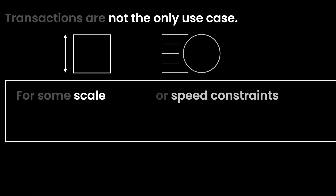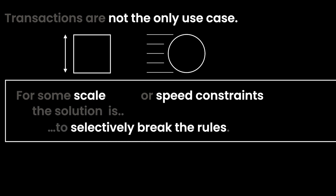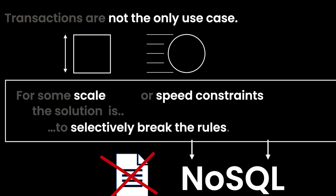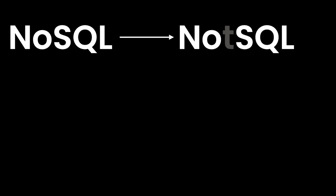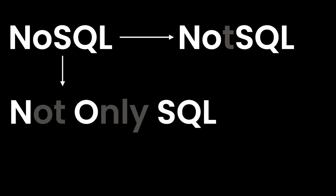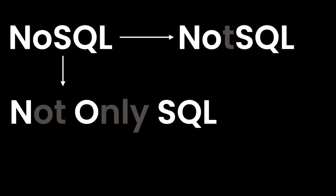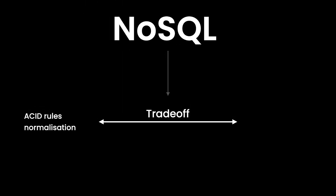Sometimes scale or speed constraints are such that the solution is to selectively break the rules. It's worth noting that NoSQL initially meant "not SQL," but it has now been retconned — at least for some databases — as "not only SQL," since those databases also support SQL queries. However, NoSQL databases invariably make a trade-off: they sacrifice one or more aspects of the ACID rules or normalization to perform better in a specific area or to meet a specific use case.